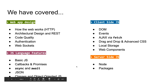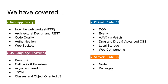We've covered web app design in general — how the web works, architectural design, and REST architectures. We've had to think about code quality, so it's important that your code is maintainable and reusable by you and others, because coding is never finished. We've also looked at authentication — Jack showed you how to use OAuth to avoid unnecessary user accounts.